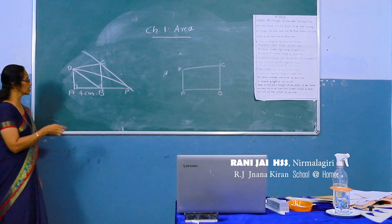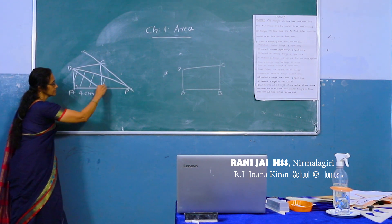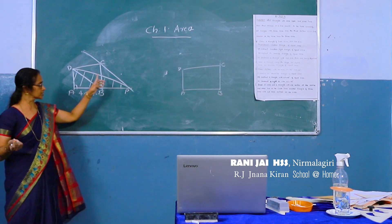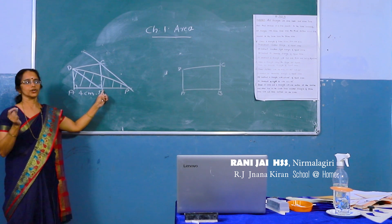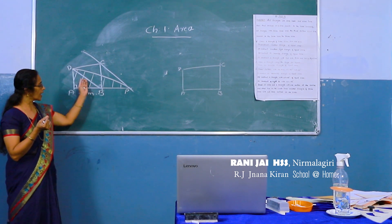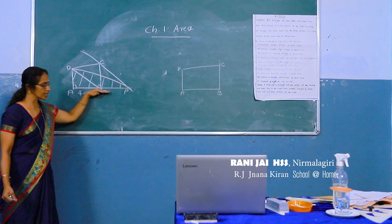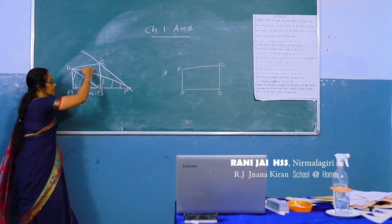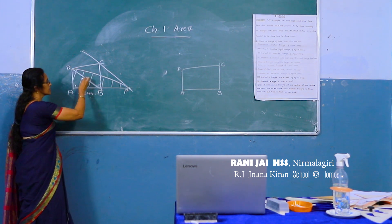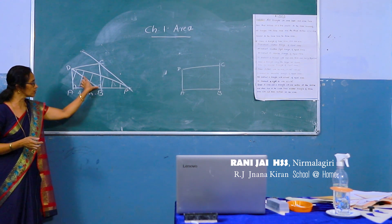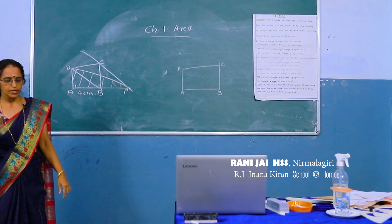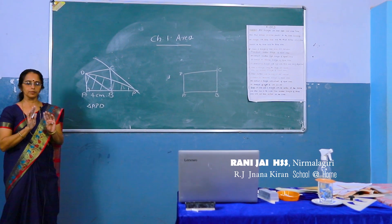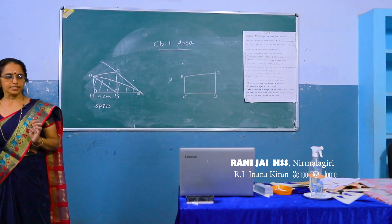Look at this figure. This is the theoretical method of making a triangle equal in area to the square. First draw the diagonal BD, then draw a line parallel to BD through C. Extend AB until it meets the parallel line; mark the meeting point as P. Join DP. Then triangle APD has the same area as the square.